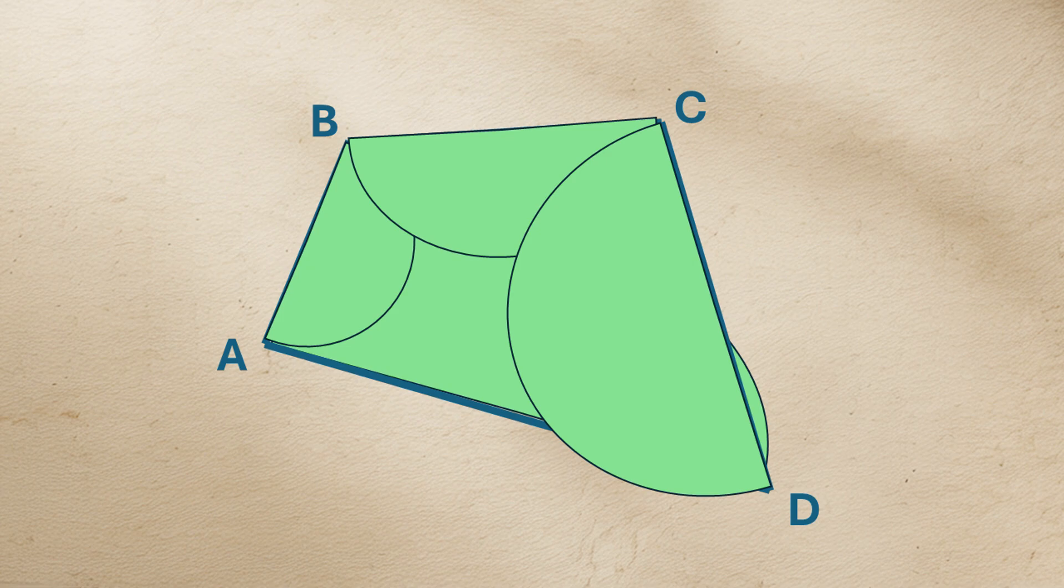Therefore, the four interior semicircles must cover the entire quadrilateral.